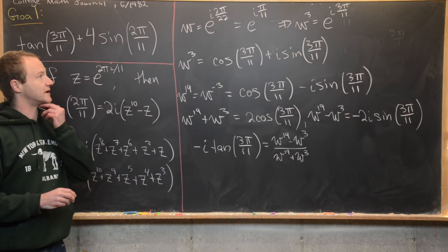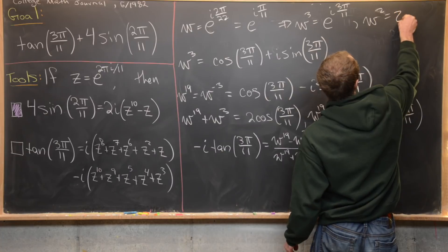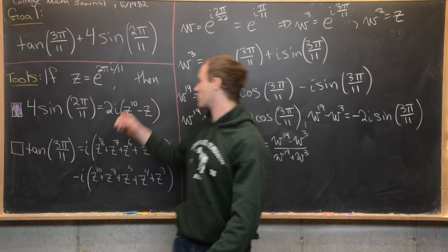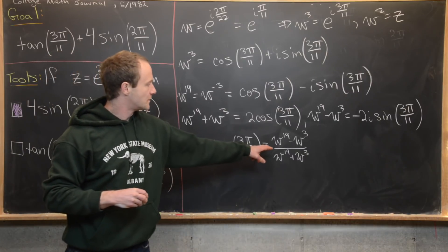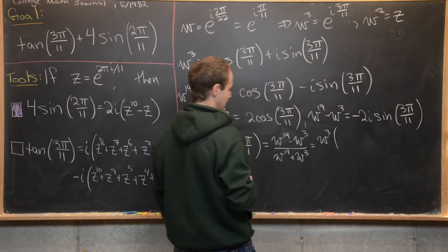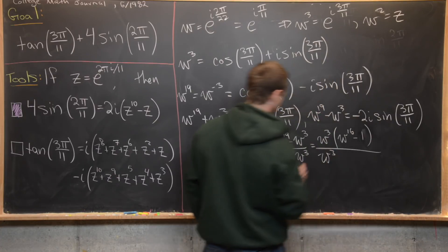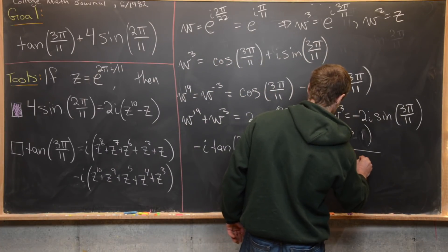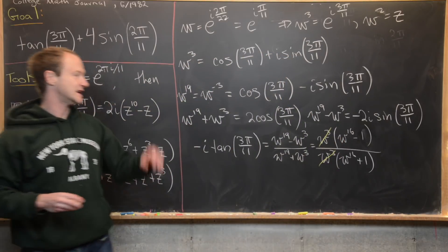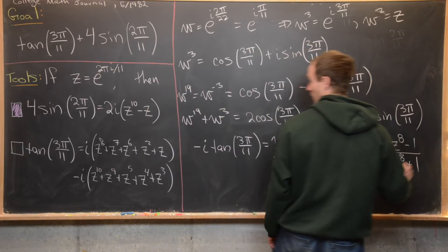We can simplify using the fact that w^2 = z, since w^2 = e^(2πi/11) which is what we called z. Factoring w^3 from numerator and denominator gives (w^16 - 1)/(w^16 + 1), and those w^3 factors cancel. Since w^2 = z, we have w^16 = z^8, so this becomes (z^8 - 1)/(z^8 + 1).